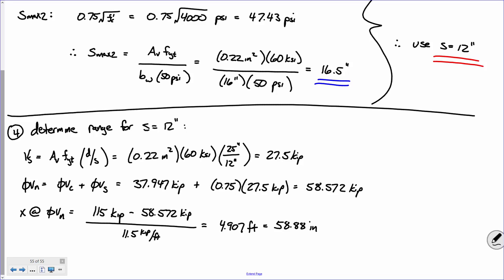Lastly, let's determine where on the shear diagram that occurs. That's 115 kips minus 58.572 kips divided by the slope of the shear diagram, which is the distributed load, and that gives you 4.907 feet, which equals 58.88 inches. One important takeaway: using an S of 12 inches, we translated that into an X distance of 58.88 inches. When we go into refinement of our design, I'll show you a table that will expand on this looking at different stirrup spacings. It's basically just taking step 4 and grunting through it over and over.